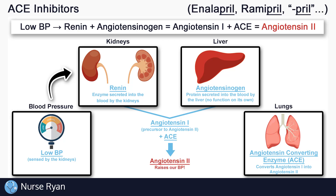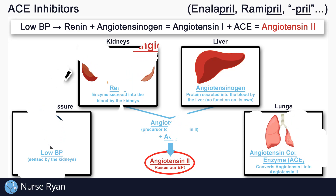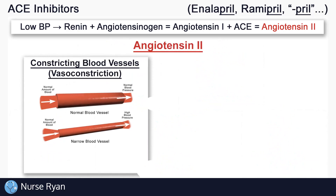ACE converts angiotensin 1 into angiotensin 2. As a side note, ACE is mainly found in the capillaries of the lungs. Now we finally have angiotensin 2, which is what this whole system is about getting to — because angiotensin 2 is what actually helps to raise blood pressure. We started with low blood pressure, and now we see that angiotensin 2 is raising blood pressure.